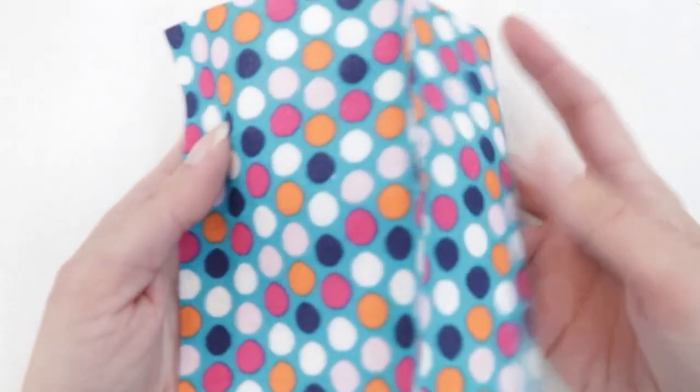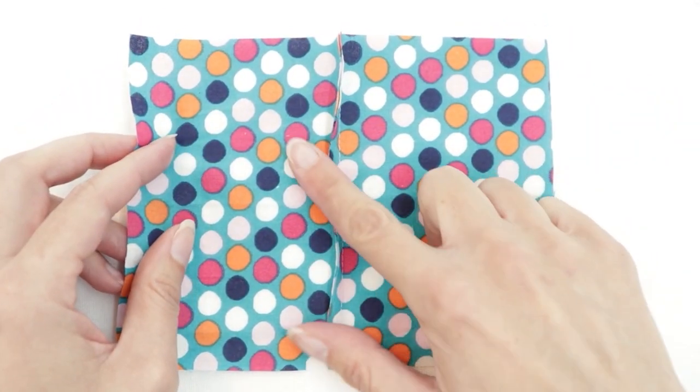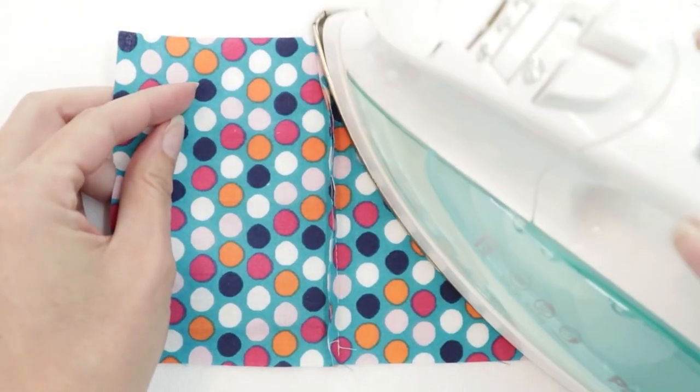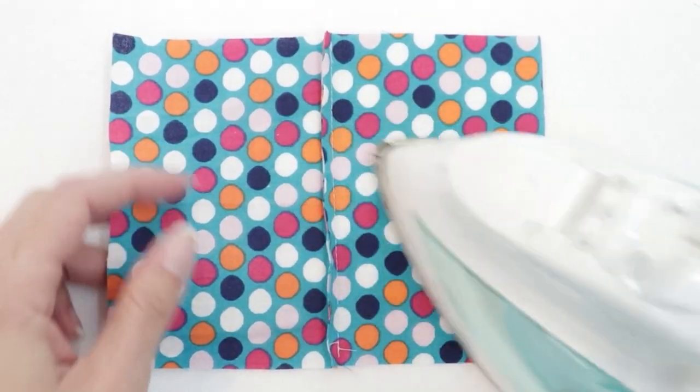Once you've completed that, open up your fabric and press the seam allowance to one direction. I'm going to tuck the fabric just slightly to make sure it's pressing right at that seam.